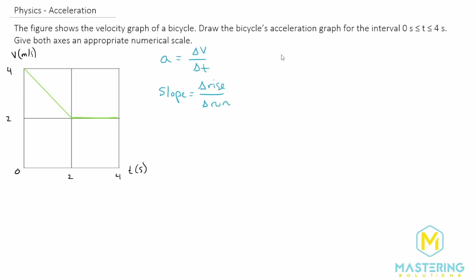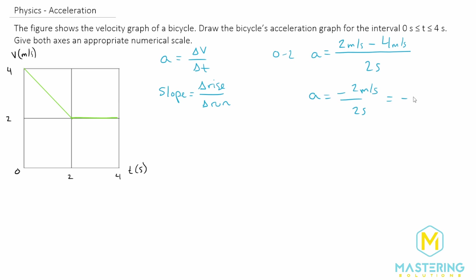For section 0 to 2 seconds, the acceleration equals the change in rise, which goes from 4 down to 2 meters per second. So 2 (final) minus 4 (initial) gives negative 2 on top, divided by the change in time which is 2 seconds. The acceleration is negative 2 meters per second divided by 2 seconds, which gives us negative 1 meters per second squared.